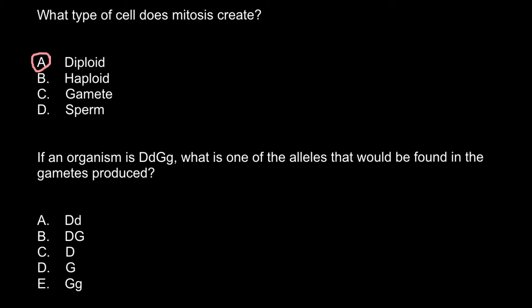And next question. If an organism is heterozygous for two genes, gene D and G, what is one of the alleles that would be found in the gametes produced? And here are the variants given.